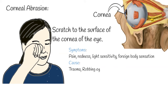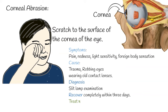Commonly, the cause of corneal abrasion is trauma to the surface of the eye — for example, being poked by a finger, itching too much, or wearing old contact lenses. Diagnosis is often by slit lamp examination after fluorescent dye has been applied. Most people recover completely within 3 days. Treatment is typically with antibiotic ointment. In those who wear contact lenses, a fluoroquinolone antibiotic is often recommended.